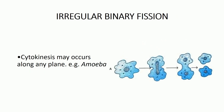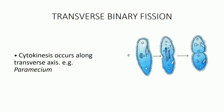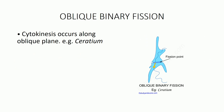The second type is irregular binary fission, which occurs in irregularly shaped organisms such as amoeba, where the cytoplasm can split across any plane. The third type is transverse binary fission, in which cytokinesis occurs along the transverse axis — the axis perpendicular to the longitudinal axis of the body, at a 90-degree angle to it. Transverse binary fission is absolutely important for us because this is the way paramecium divides. Finally, we have oblique binary fission, in which cytokinesis occurs along the oblique plane — not exactly 90 degrees to the long axis but somewhat oblique — and it occurs in Ceratium.